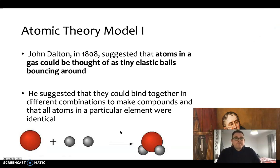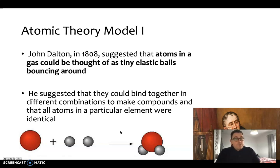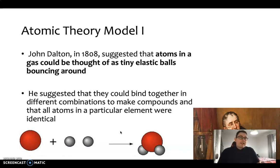In 1808, John Dalton suggested that atoms, particularly in a gas, could be thought of as tiny elastic balls that bounce around all over the place. We still use that model when describing what solids, liquids, and gases are made up of in terms of how particles interact. In a solid they're tightly together and vibrate in a fixed position; in a liquid they're slightly further apart and roll over each other; and in a gas they're just little balls flying all over the place.